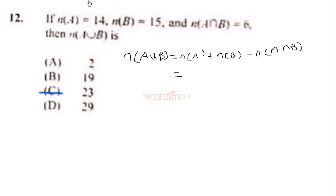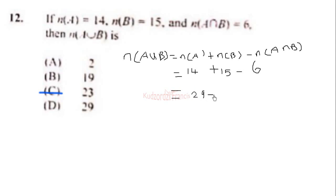This will be equal to 14 plus 15 minus 6, which is the intersection. So this will be 29 minus 6, which equals 23. The correct choice is option C.